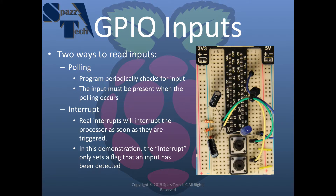Before we get into the program, we want to talk a little bit about the two ways we're going to read those inputs in this program, and talk about the circuit that we need to build to create those inputs. There are lots of different ways to read inputs into a C program, but two of the most common ways are through what's called polling and what's called an interrupt.